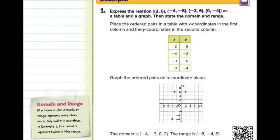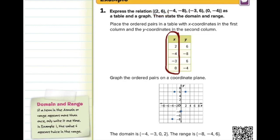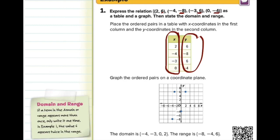The first thing we do is create a table from these ordered pairs. Our ordered pairs are in the order (x, y), so all x-values come first: 2, −4, −3, and 0. The y-coordinates are the second numbers: 6, −8, 6, and −4. When creating your table, x-values come first, y-values come second.